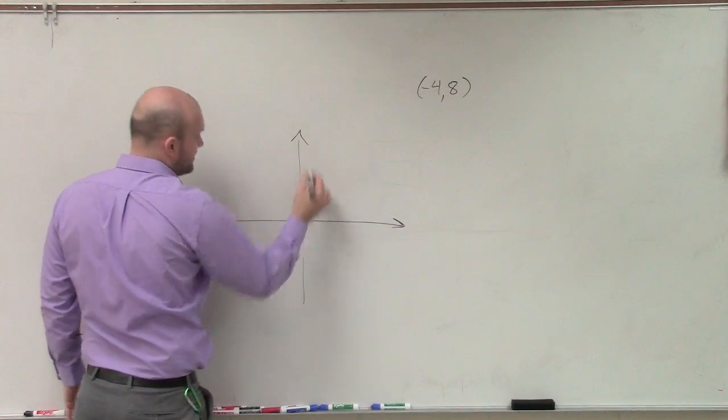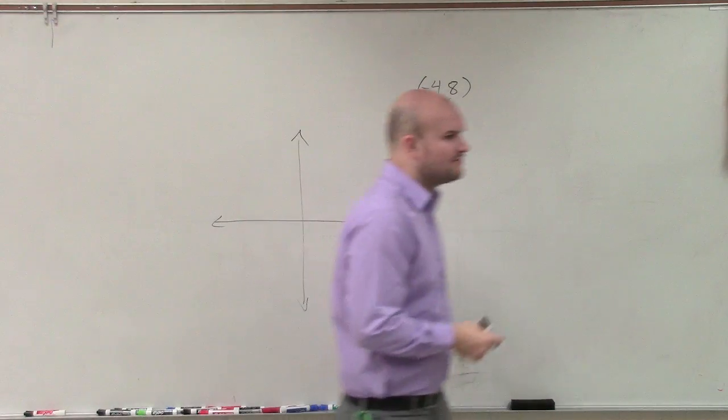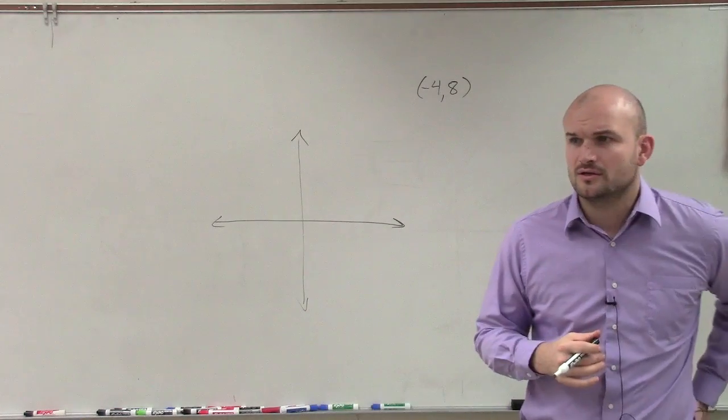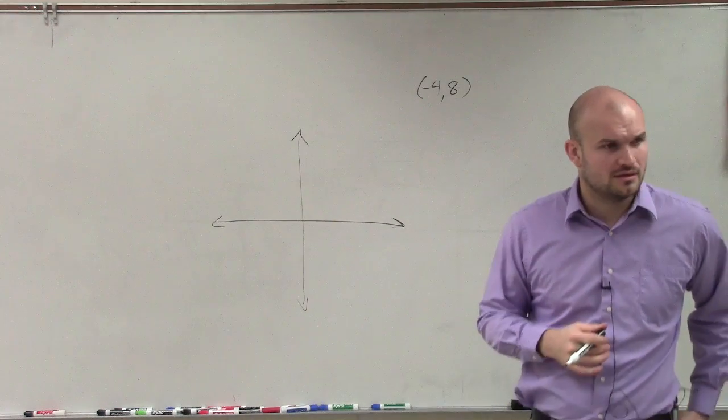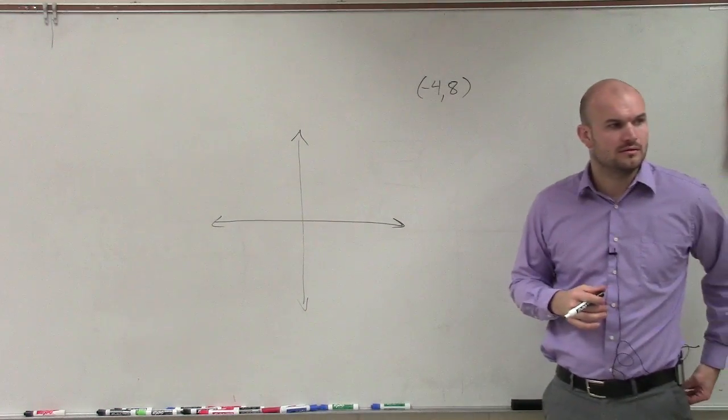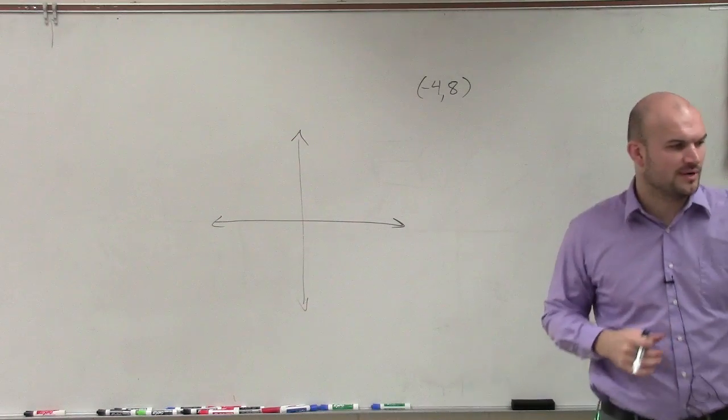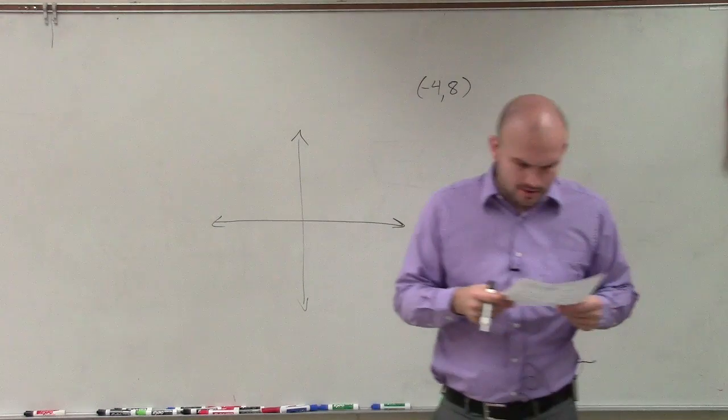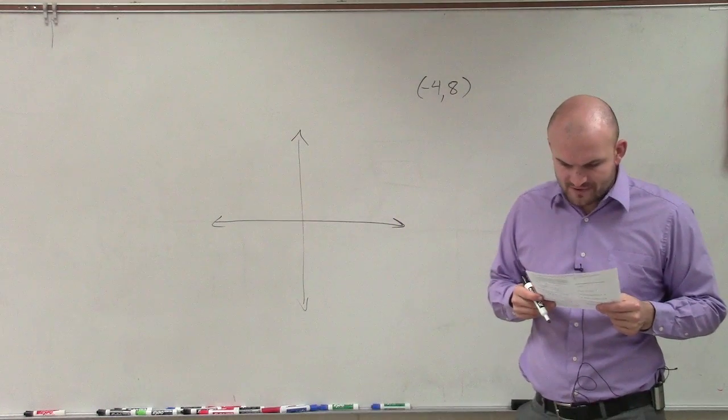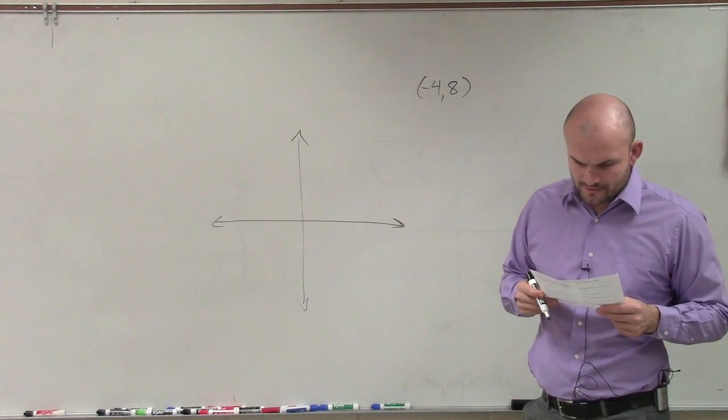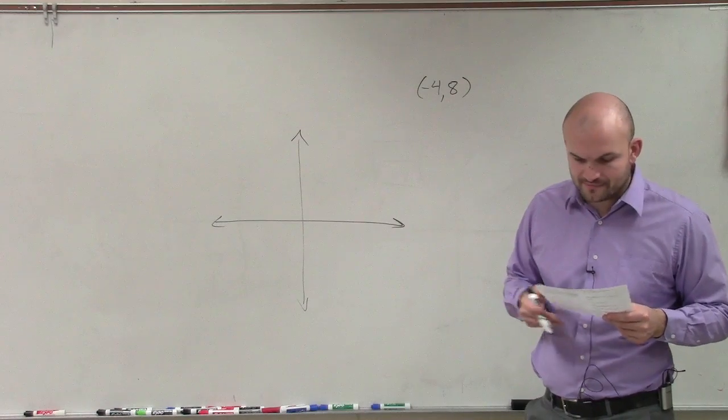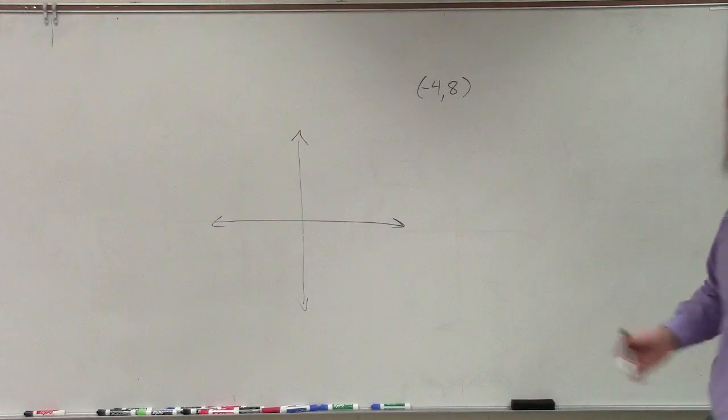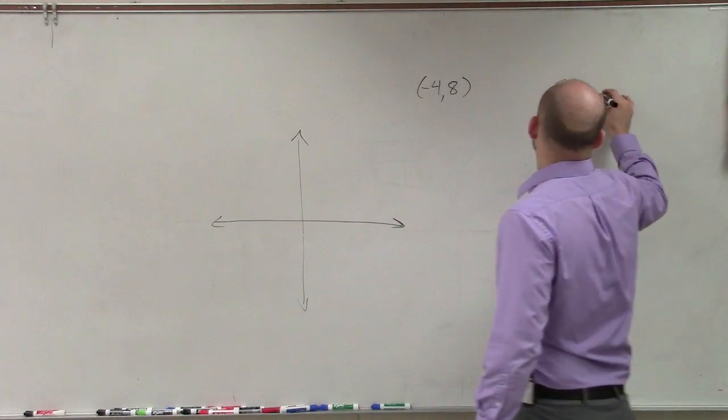So automatically, if they're asking you to, what are they asking? They're finding the what value? Find the terminal side of the angle of alpha. Let me just see the problem real quick. So find the terminal side of the angle theta in standard position. Find sine of theta. So we need to find our sine of alpha.